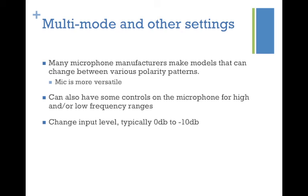Some microphones also have controls for high and/or low frequency ranges, making the microphone less sensitive to low or very high frequencies — between 20 and 20,000 Hz. You can also change the input level, typically a switch going from 0 to -10 dB. This tells the microphone to be less sensitive or at its normal range of sensitivity, literally changing the input level by 10 dB depending on how you switch it.